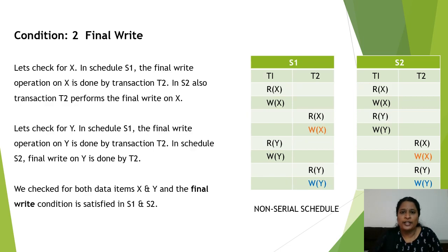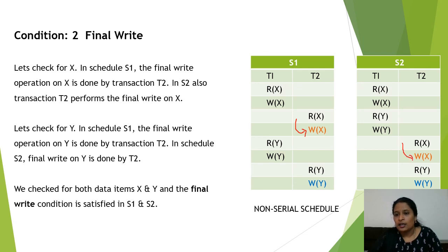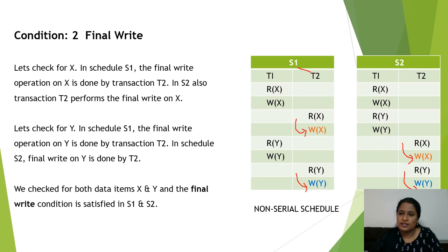Condition 2 — Final Write. This condition states that if the final write on data X is done by transaction 2 in schedule S1, then in schedule S2 it should also be done by transaction 2. Likewise, if the final write on data Y is done by transaction 2 in S1, then the final write on Y should also be done by transaction 2 in S2. We check for both data items X and Y, and the final write condition is satisfied for both.